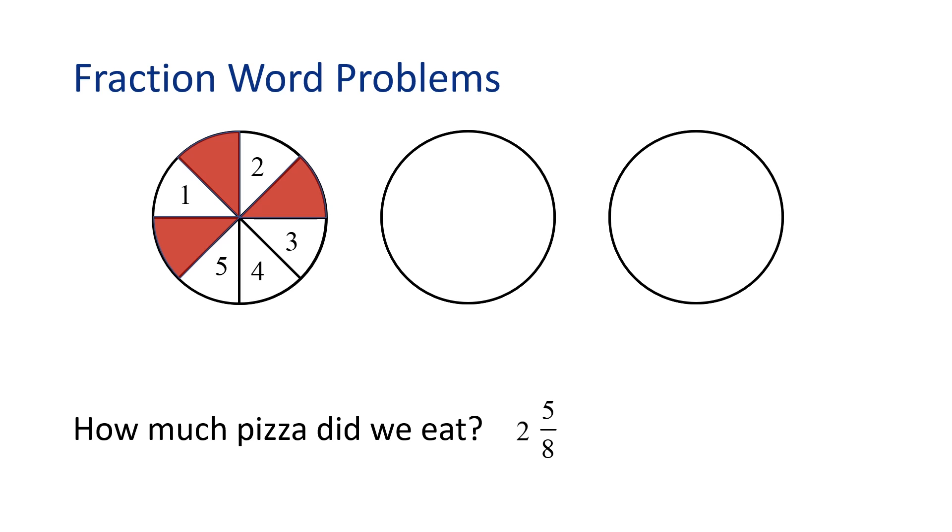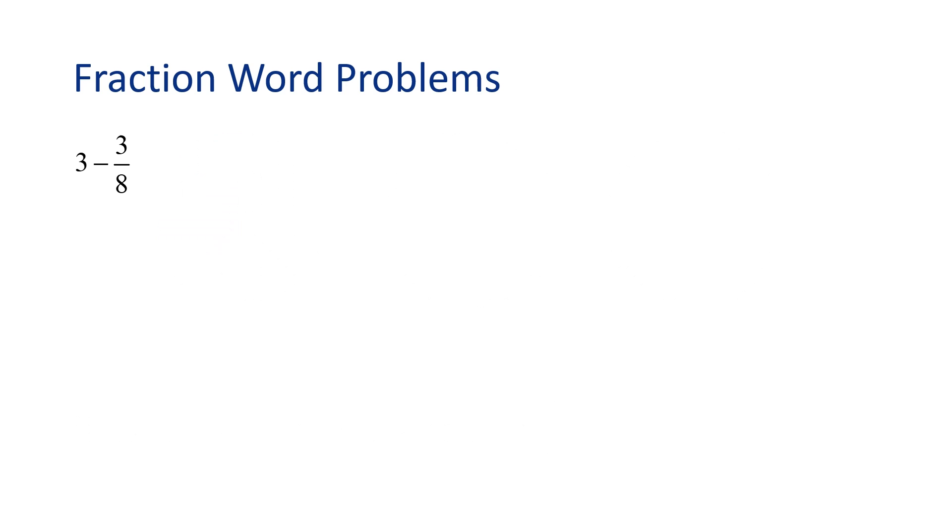What if we wanted to solve this problem without a model? We would want to find three minus three-eighths, where this difference would equal the amount of pizza that we ate. Since we want to subtract a fraction from a whole number, we need to rewrite three as two and eight-eighths. Why? Because our fraction that we're working with is three-eighths and eighths is the denominator. Also, eight-eighths is equal to one whole, so we just converted one of the three holes into an equivalent fraction.